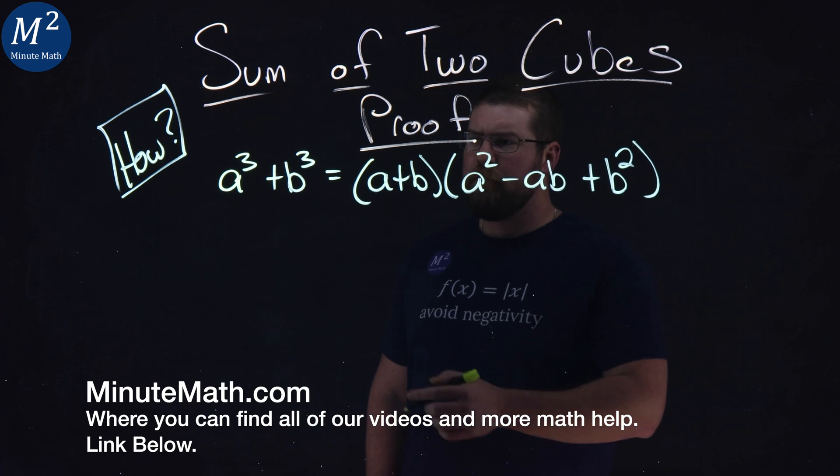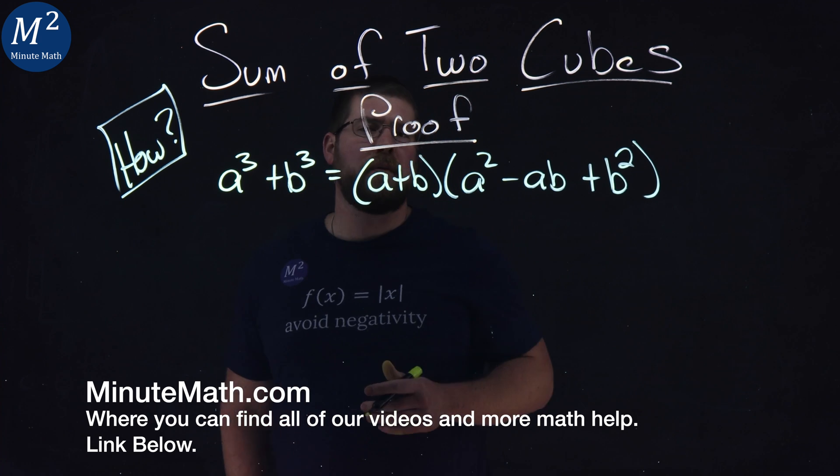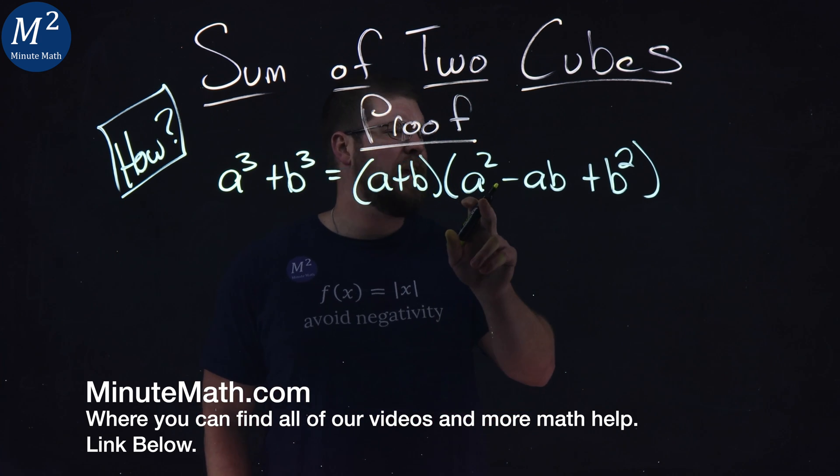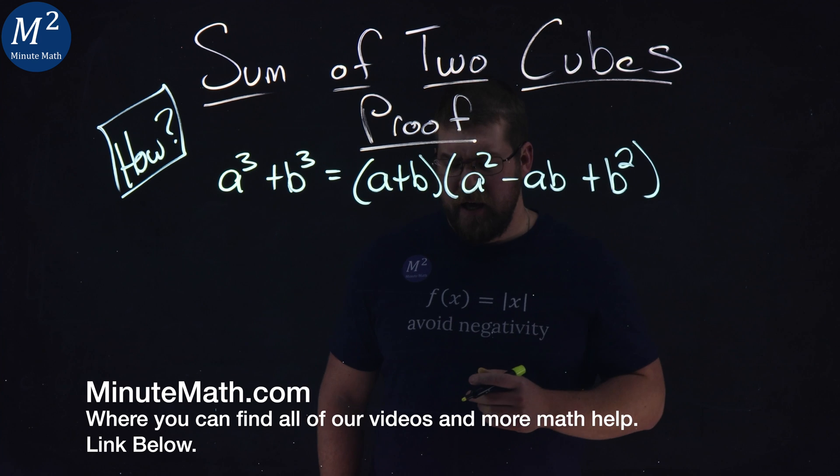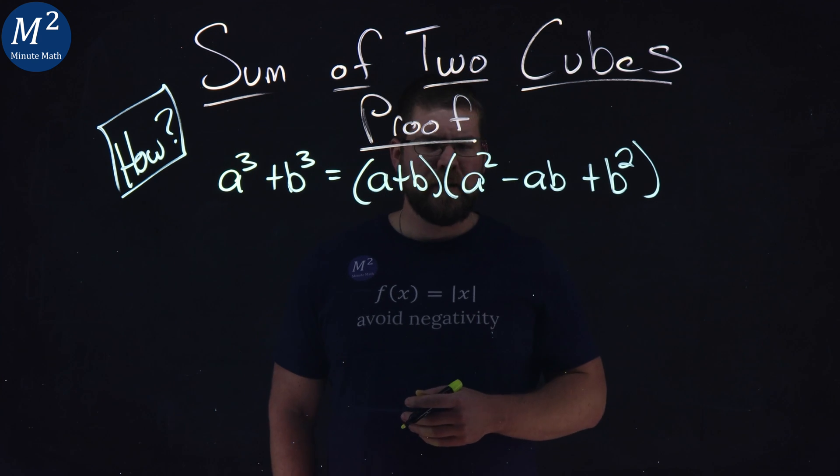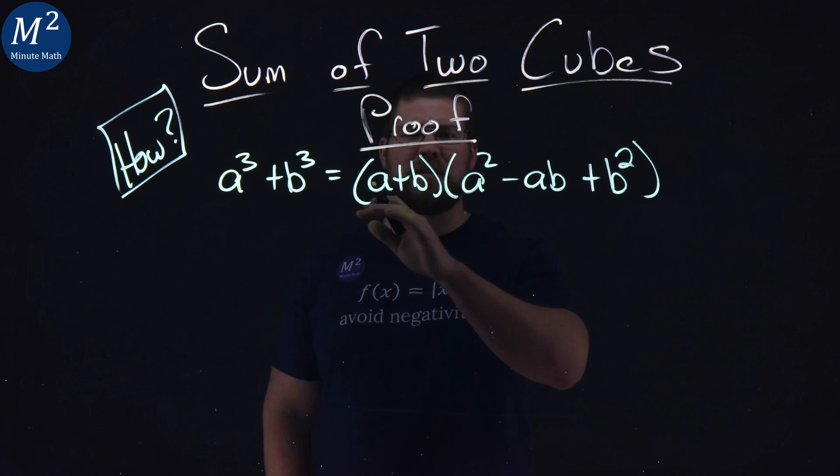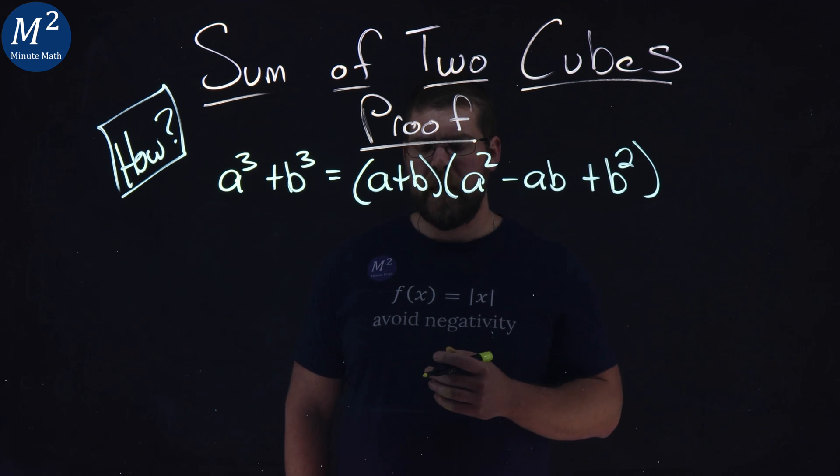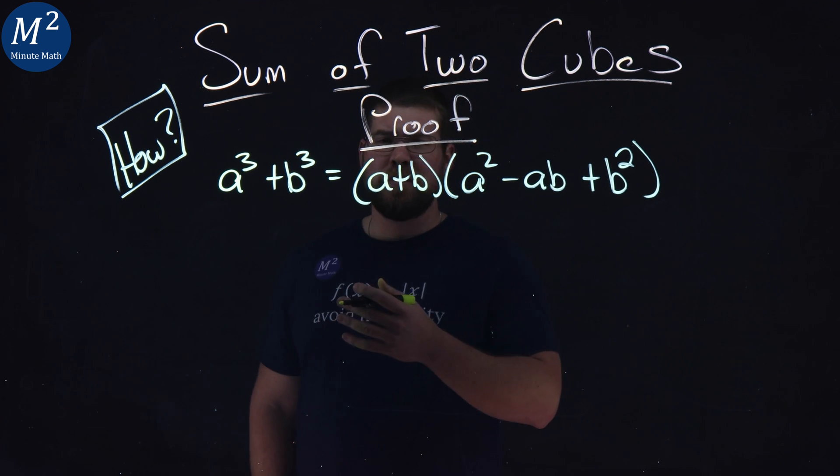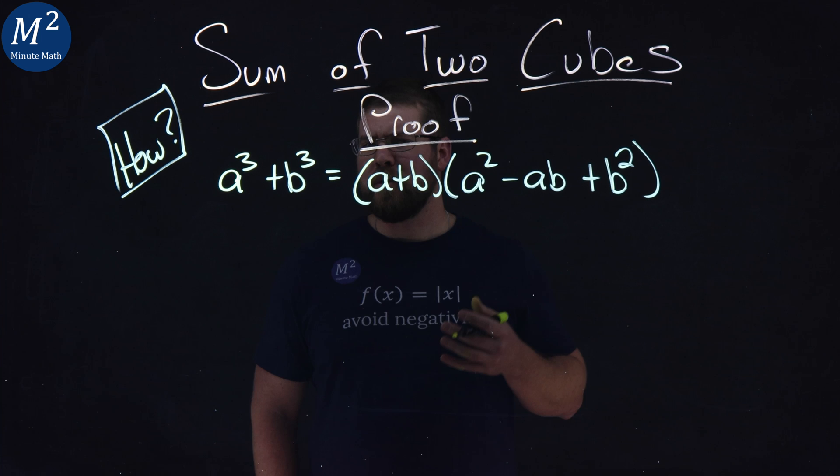If you were like me, when you saw a cubed plus b cubed equal to a plus b times a squared minus ab plus b squared for the first time, you were kind of confused. How does that happen? Well, I'm here to show you that it does happen and how I learned how to do it.